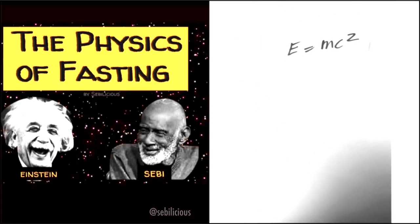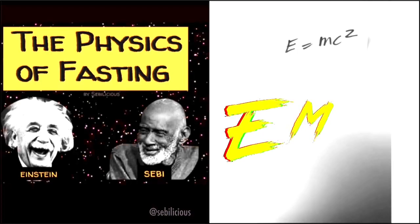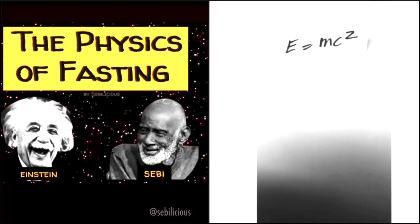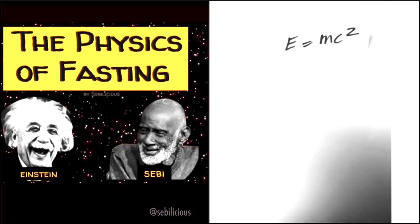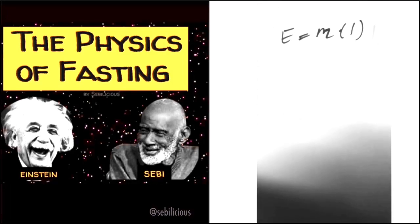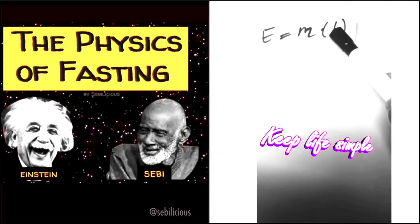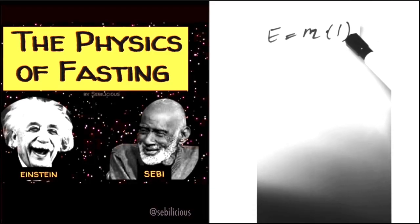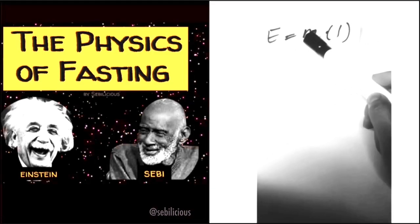Very famous equation, E equals mc squared, where energy is equal to mass times the speed of light squared. So because it's an equation, whatever happens to one side happens to the next. And just to simplify it, I'm going to write it E equals m, the speed of light squared we're going to simplify into a one, because what we're going to focus on is energy and mass, the relationship.